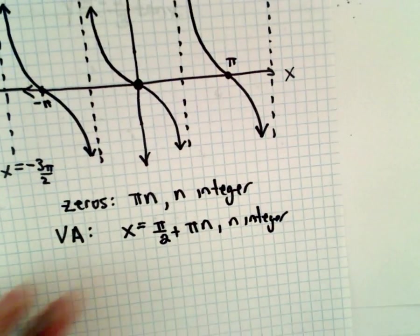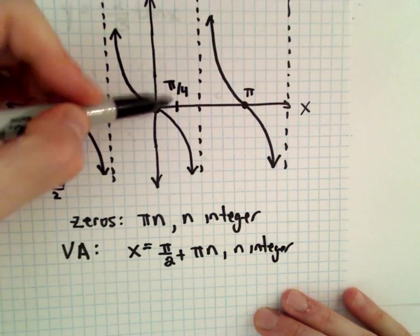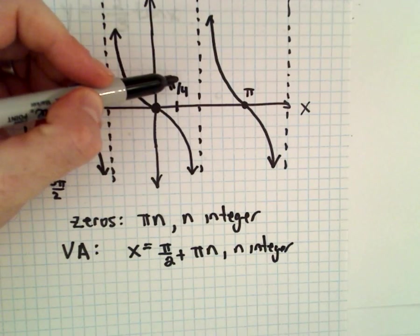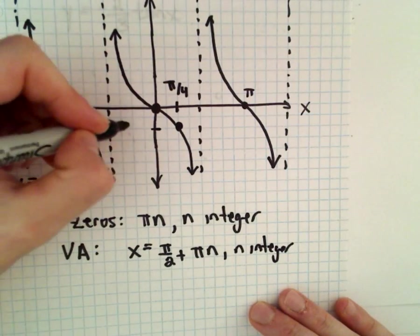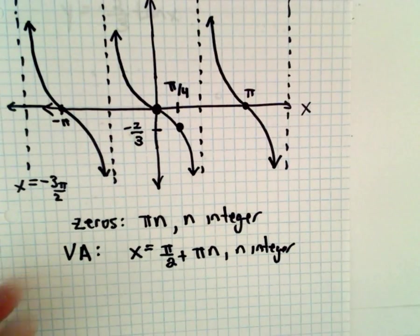If you wanted to, you could plot maybe even an extra point. So tangent at pi over 4 normally goes through positive 1, but in this case, at pi over 4, due to the reflection, it'll go through negative 2 thirds.